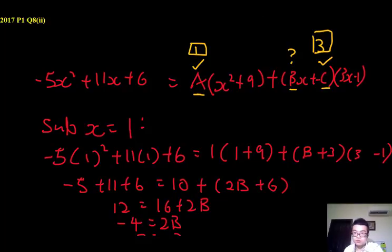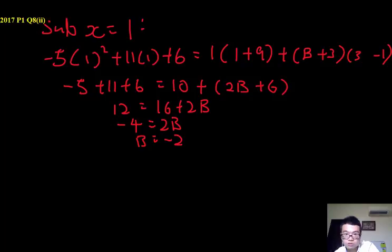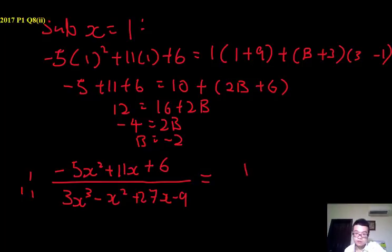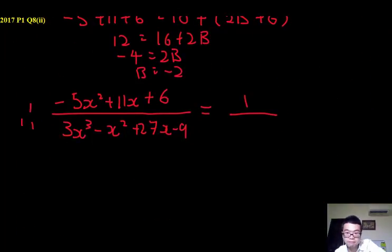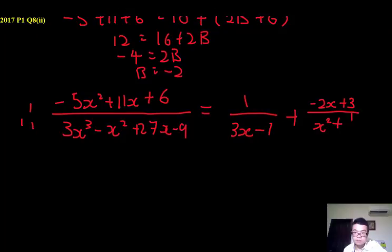Just one last working itself. We have found that A, therefore just one last statement. We have it, A being 1, B being minus 2, and C being 3. And this is your answer for 8 part 2.